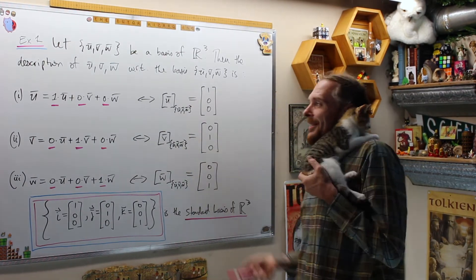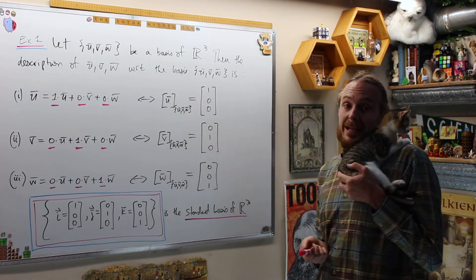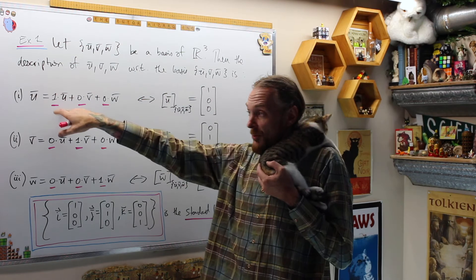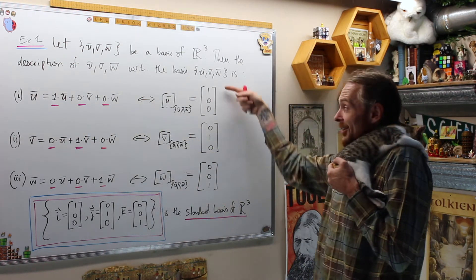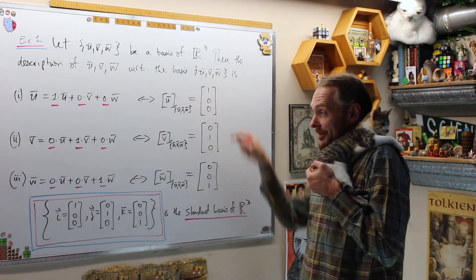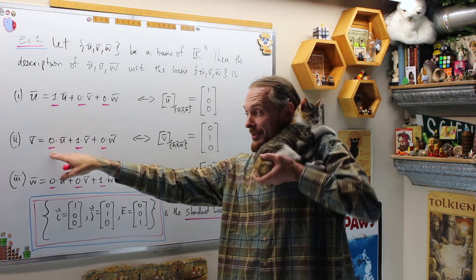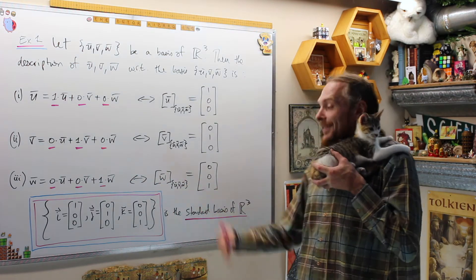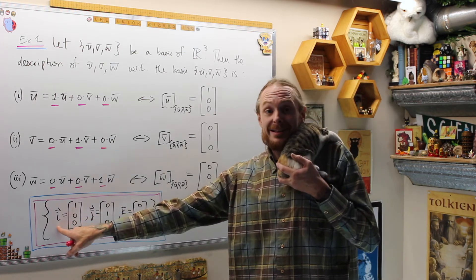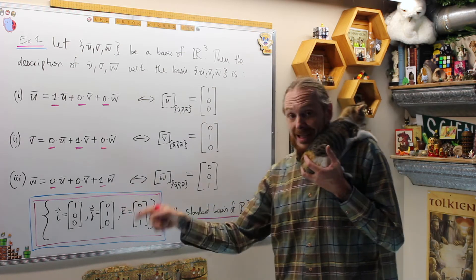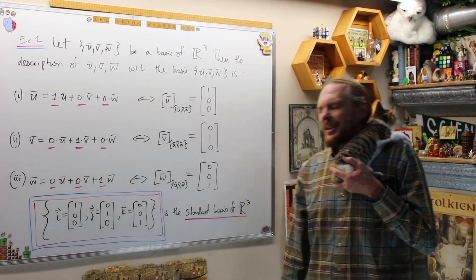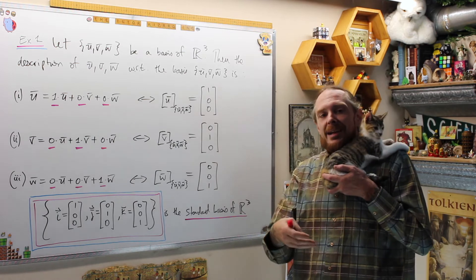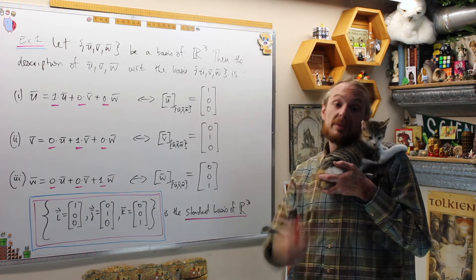Example one: let U, V, W be a basis for space R3. The description of U with respect to that basis is one multiple of U, no multiples of V, and no multiples of W — so its coordinates are (1, 0, 0). Similarly, V has coordinates (0, 1, 0), and W has coordinates (0, 0, 1). Classically we call (1, 0, 0) the vector i, (0, 1, 0) the vector j, and (0, 0, 1) the vector k. This is called the standard basis of R3, and we can associate the standard basis to any basis U, V, W.